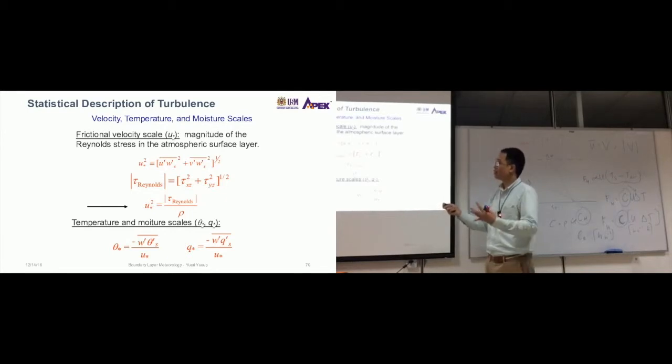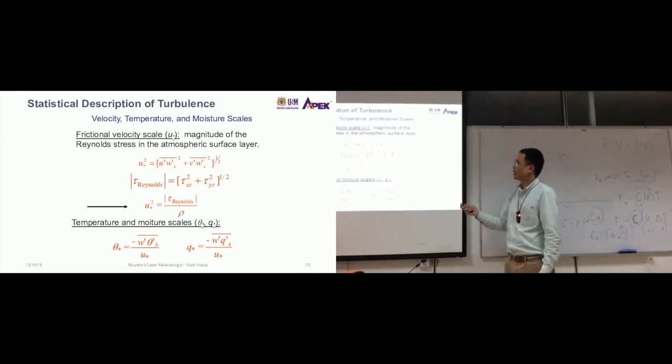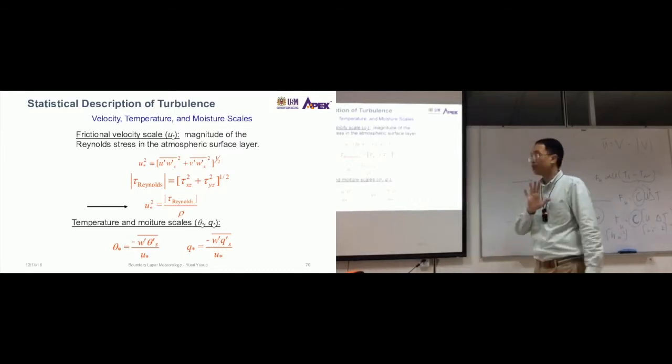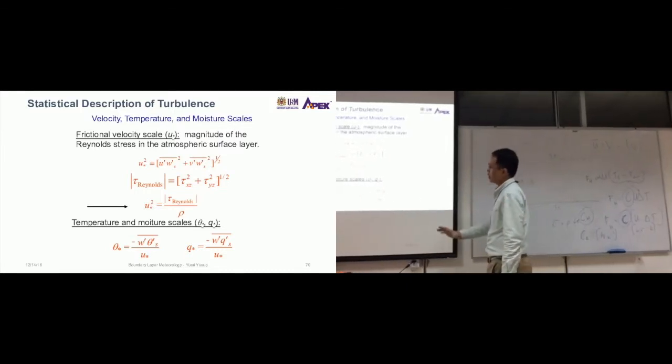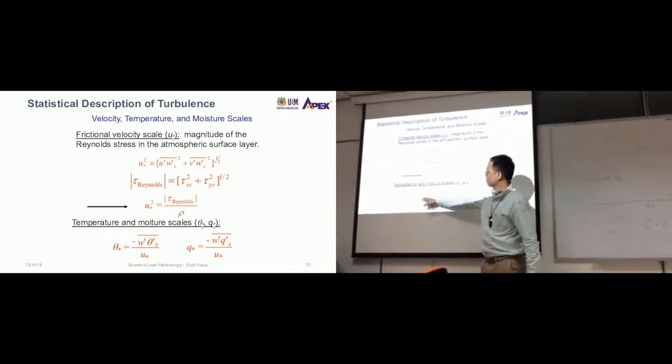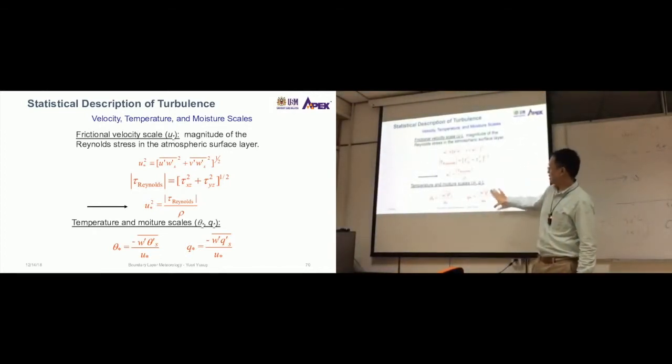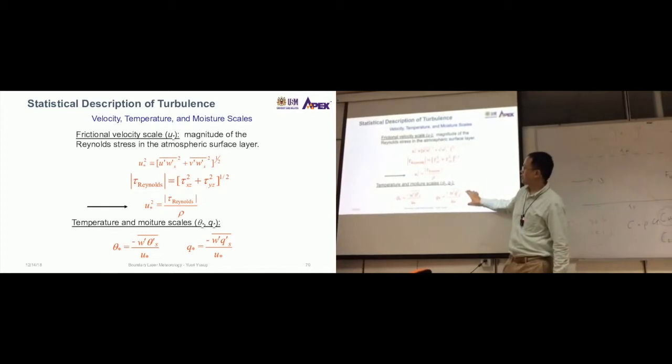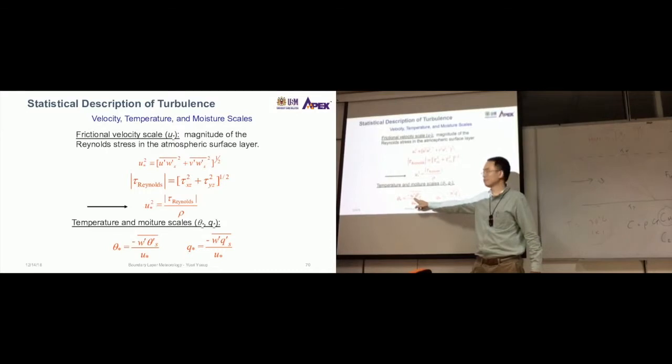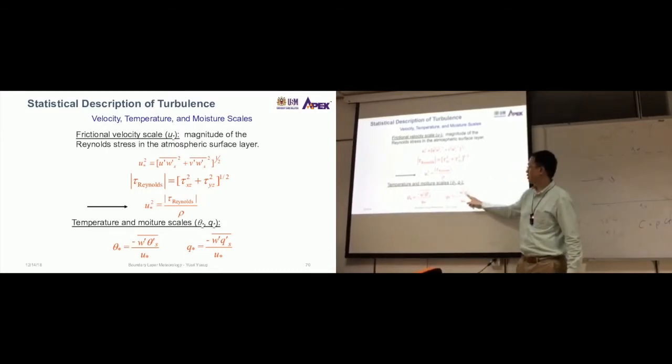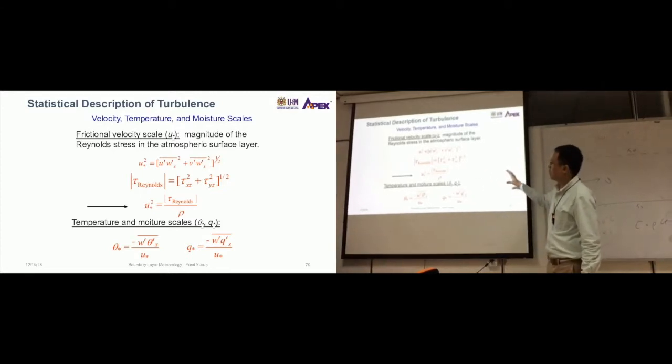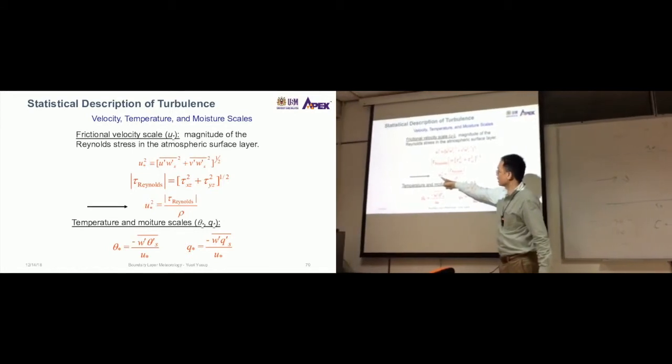Large values of this means higher friction; low values, lower friction. This relates to the Reynolds stress. Aside from the friction scale, there's also the temperature and moisture scale. This and this—you can follow the same treatment as this Reynolds stress. But in the end, you see that this component is the largest, so we can ignore all the other components.